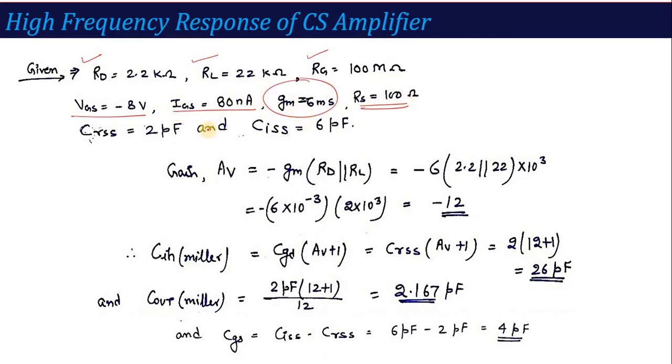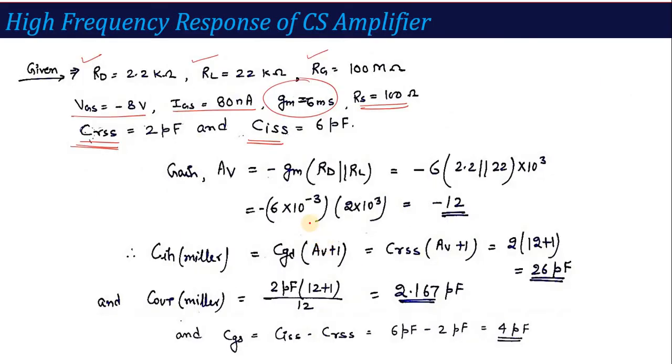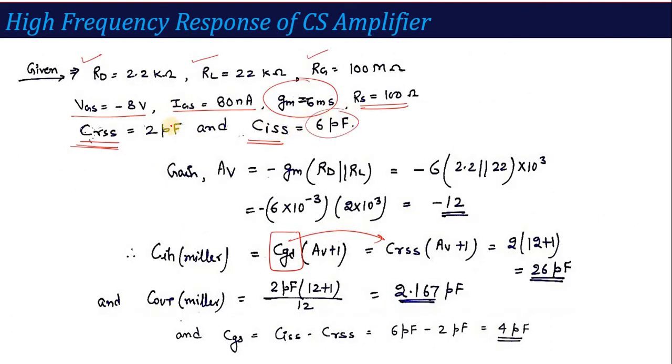Now in this question, you have given C_RSS and C_ISS. I was talking about this: if C_ISS and C_RSS are given here, how do you calculate C_GS and C_DG? C_GD is equal to C_RSS. And C_GS is basically C_ISS minus C_RSS. Here C_ISS is given as 6, 6 minus 2, that becomes 4 picofarad. This is C_GS calculated here, 4 picofarad. Now once you have calculated your capacitances, then after that, we calculate the gain.